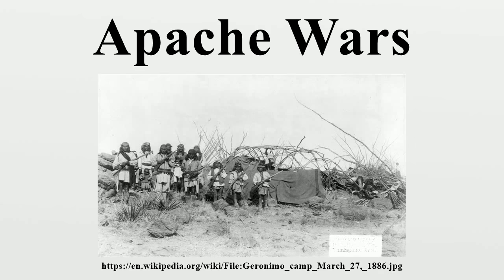Geronimo, probably the most notable Apache warrior of the period, belonged to a Chiricahua Apache band. After two decades of guerrilla warfare, Cochise, one of the leaders of the Chiricahua band, chose to make peace with the U.S. and agreed to relocate his people to a reservation in the Chiricahua Mountains. Soon afterward in 1874, Cochise died. In a change of policy, the U.S. government decided to move the Chiricahua to the San Carlos Reservation in 1876. Half complied; the other half, led by Geronimo, escaped to Mexico. In the spring of 1877, the U.S. captured Geronimo and brought him to San Carlos, where he stayed until September 1881 when, fearing imprisonment, he fled with 700 Apache back to Mexico.